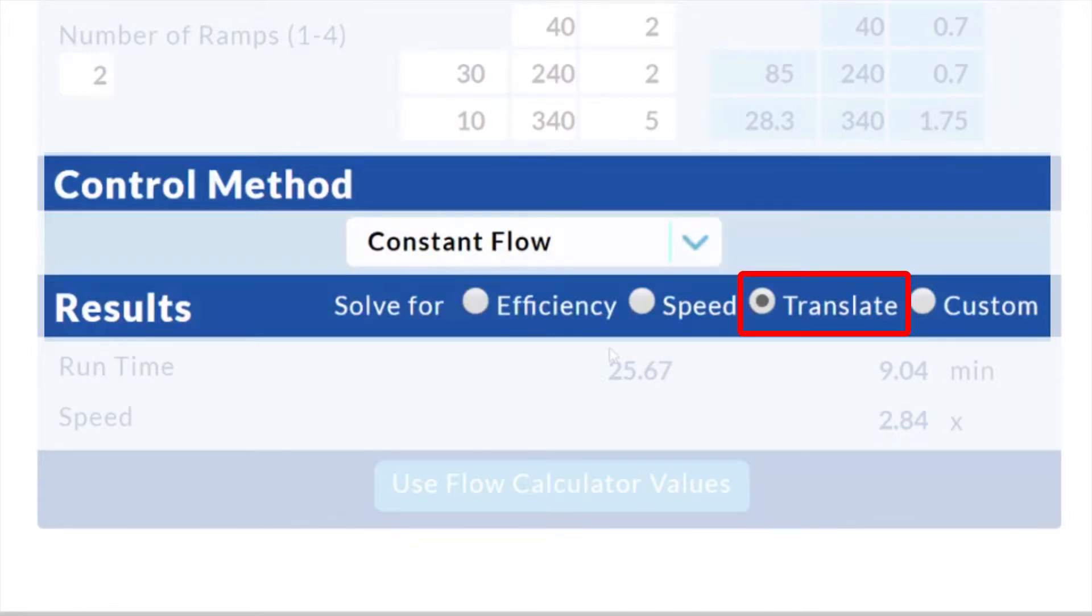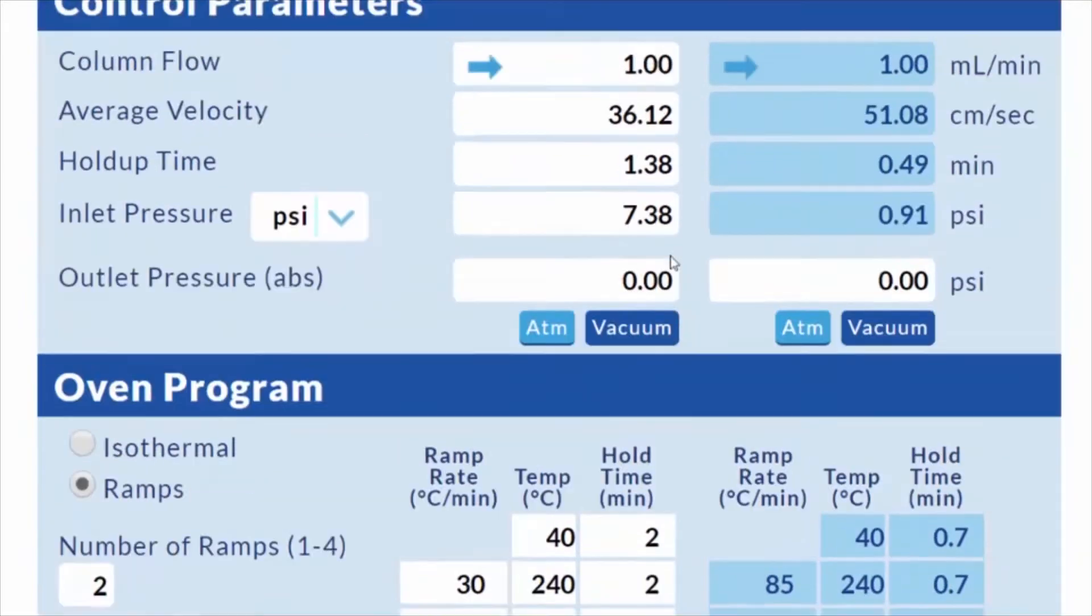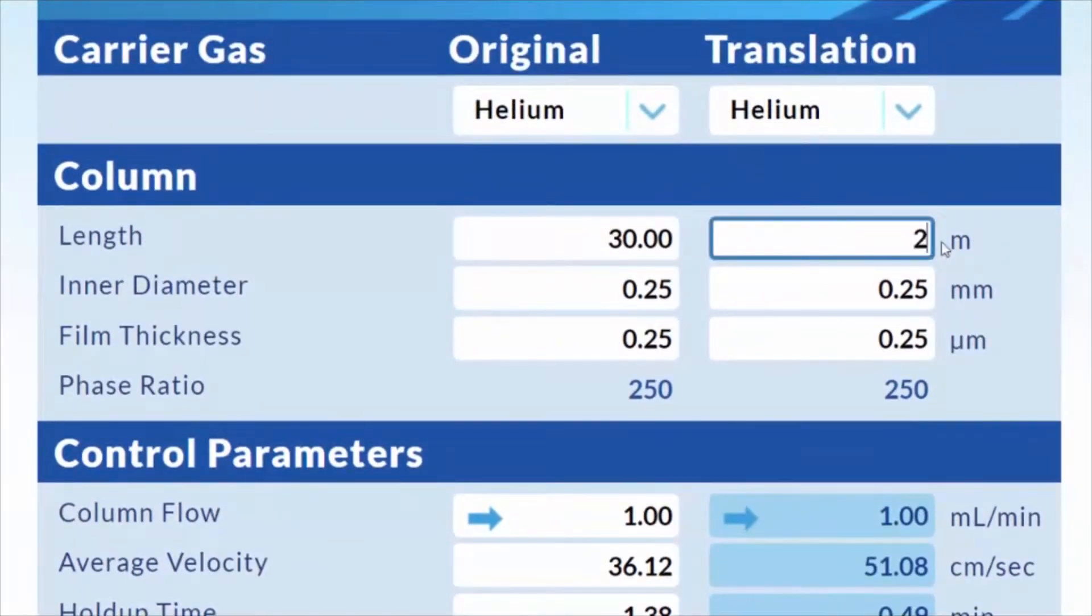By choosing the translate option, you are asking the Easy GC Method Translator to balance speed and efficiency.